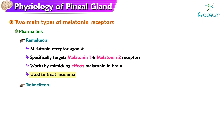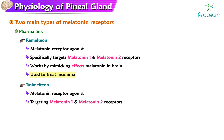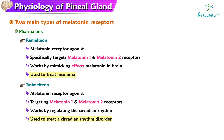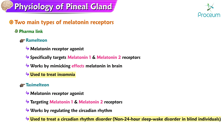Tasimelteon is also a melatonin receptor agonist targeting the MT1 and MT2 receptors, and it works by regulating the circadian rhythm. It is used to treat a circadian rhythm disorder called non-24-hour sleep-wake disorder in individuals who are totally blind.